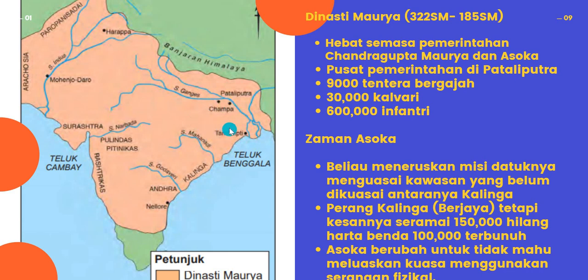Lepas tu dikuiti anak dia Bindu Sara, lepas tu diteruskan lagi oleh cucu dia iaitu Asoka. Dinasti ni keluarga kan - hebat. Dari segi tentera, dia ada 9,000 tentera bergajah - tadi Nanda 3,000, dia triple pula. Ada 30,000 Kalvari tentera berkuda, dan ada 600,000 tentera infanteri. Memang betul lah kenapa Maurya ni hebat - tengok tentera dia, hebat dan ramai, dan berjaya menguasai kawasan yang luas.